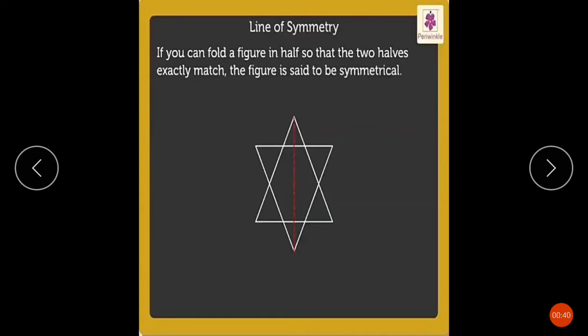If you can fold a figure in half (اگر آپ اسے half میں fold کرتے ہیں) so that the two halves exactly match (یہ بالکل match ہو جاتے ہیں), the figure is said to be symmetrical.